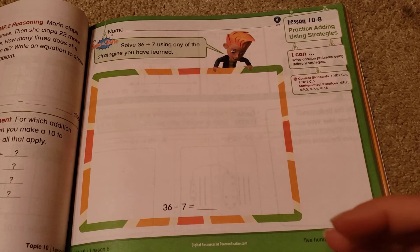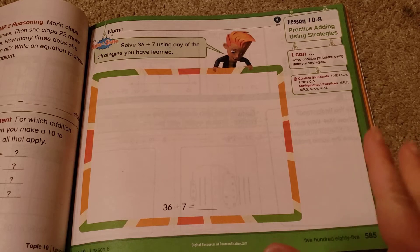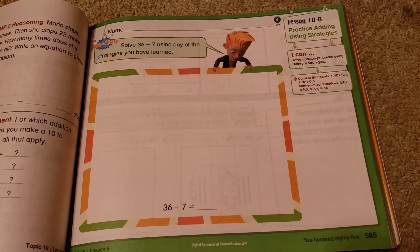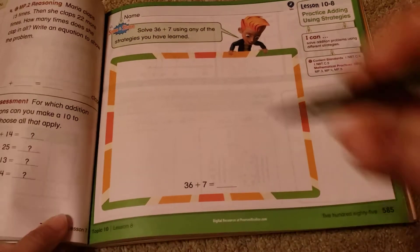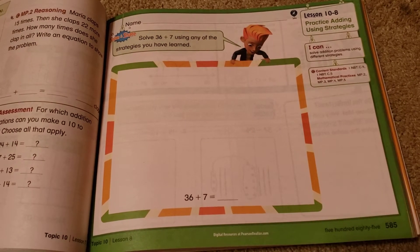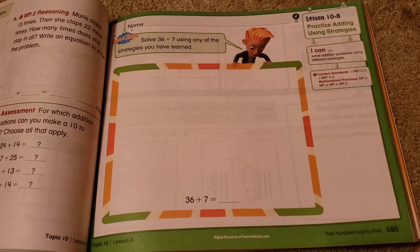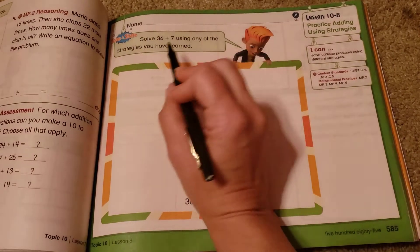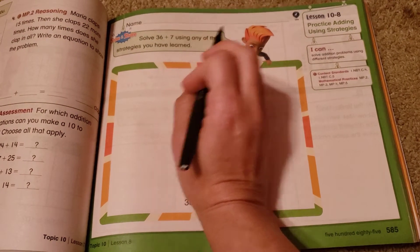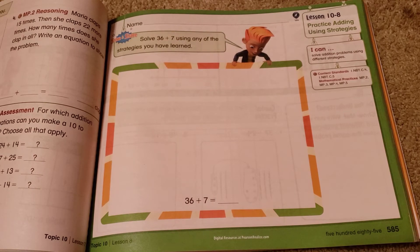So we've been adding all different kinds of ways. This section reviews those ways and shows you how to solve whatever problem it is based on the best strategy to use, the one that's easier for you, the one that works the best. So this one is solve 36 plus 7 using any of the strategies we've learned. Let's think about our strategies that we have learned.